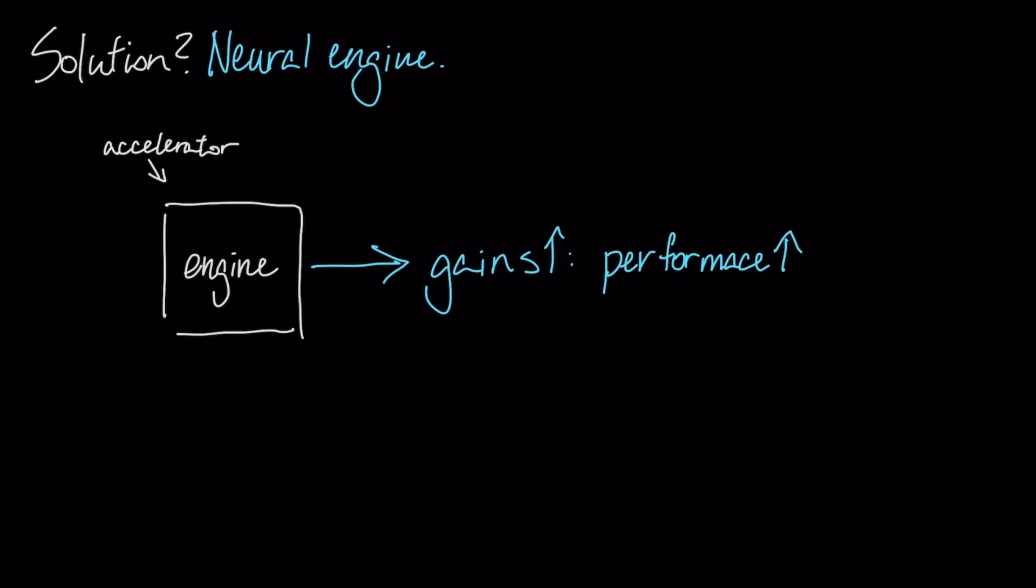Running a complex neural network on a phone should be impossible. It would be too slow and drain your battery. The solution for this was the Neural Engine, a dedicated accelerator that delivers orders of magnitude gains in performance per watt for neural network inference.